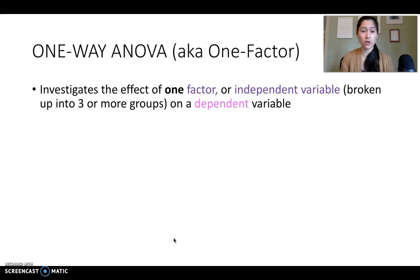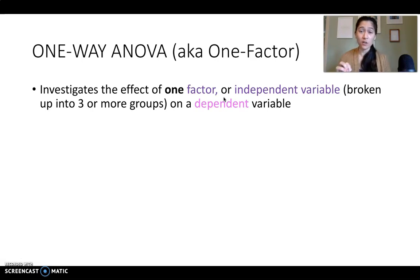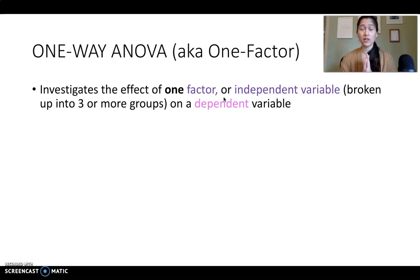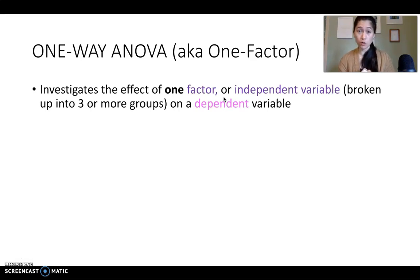We'll start here with a one-way ANOVA. A one-way ANOVA investigates the effect of one factor or independent variable, and that independent variable is what's broken up into three or more groups. Remember, if you have one independent variable that's broken into two groups, you can do a t-test, but if that one independent variable is broken into three or more groups, you need to do an ANOVA.